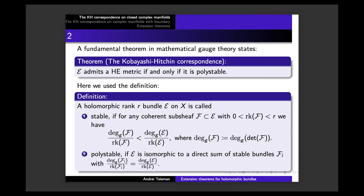What is the importance of this theorem? The condition of admitting a Hermitian-Einstein metric appears to be a differential geometric analytical problem — there we have a global analytical object, a differential equation. On the other side, polystable is a pure complex geometry condition: it concerns the coherent sub-sheaves of E. If X is an algebraic variety, then we are within algebraic geometry.